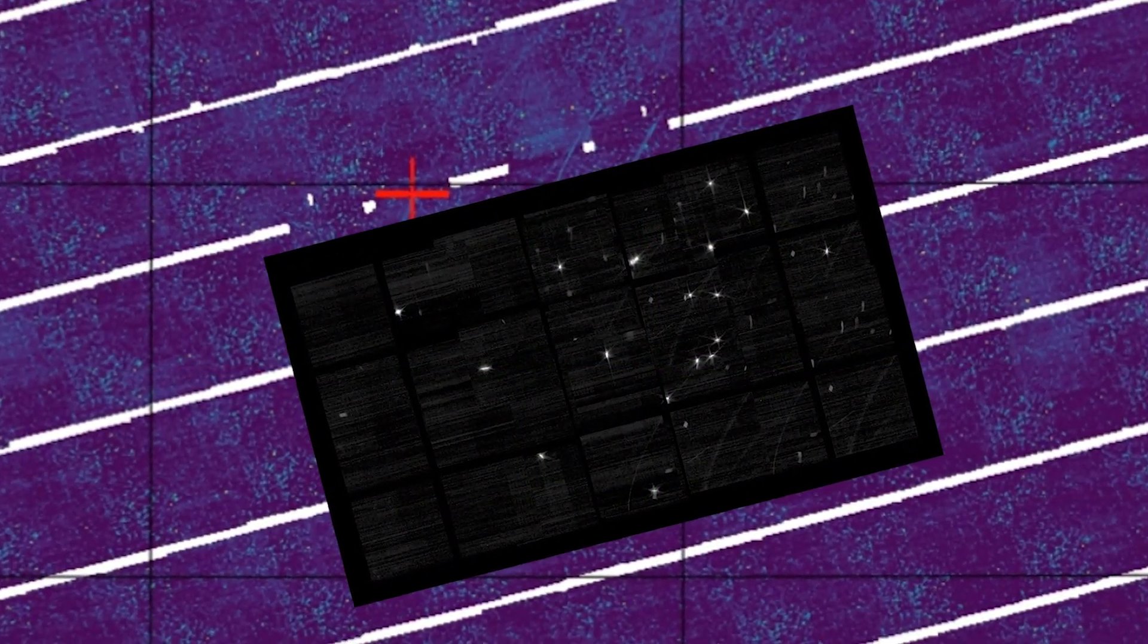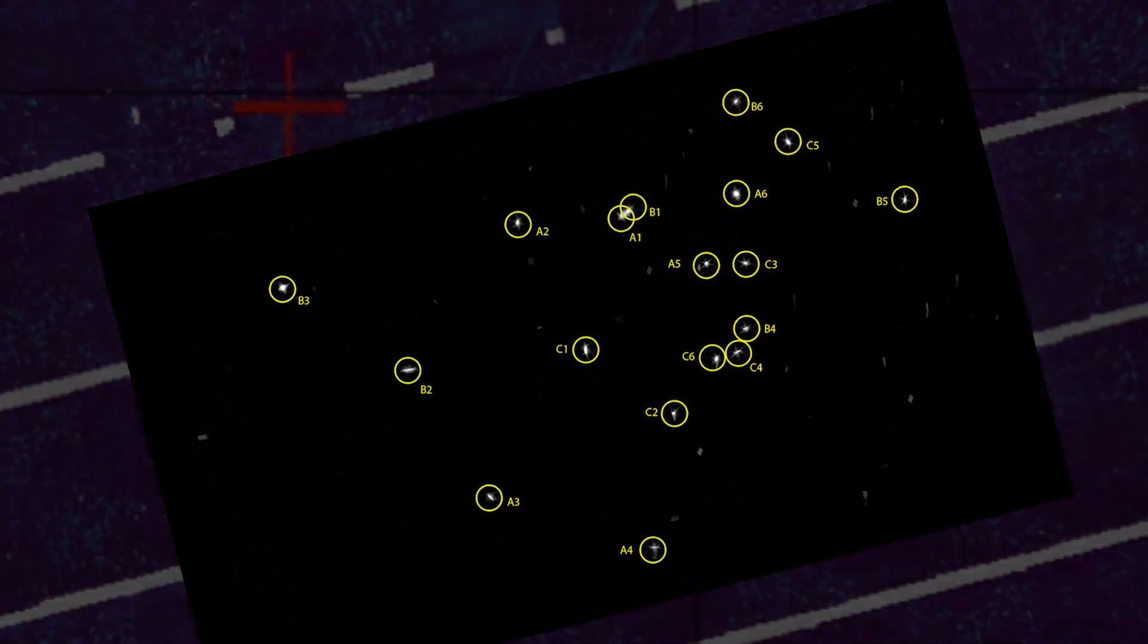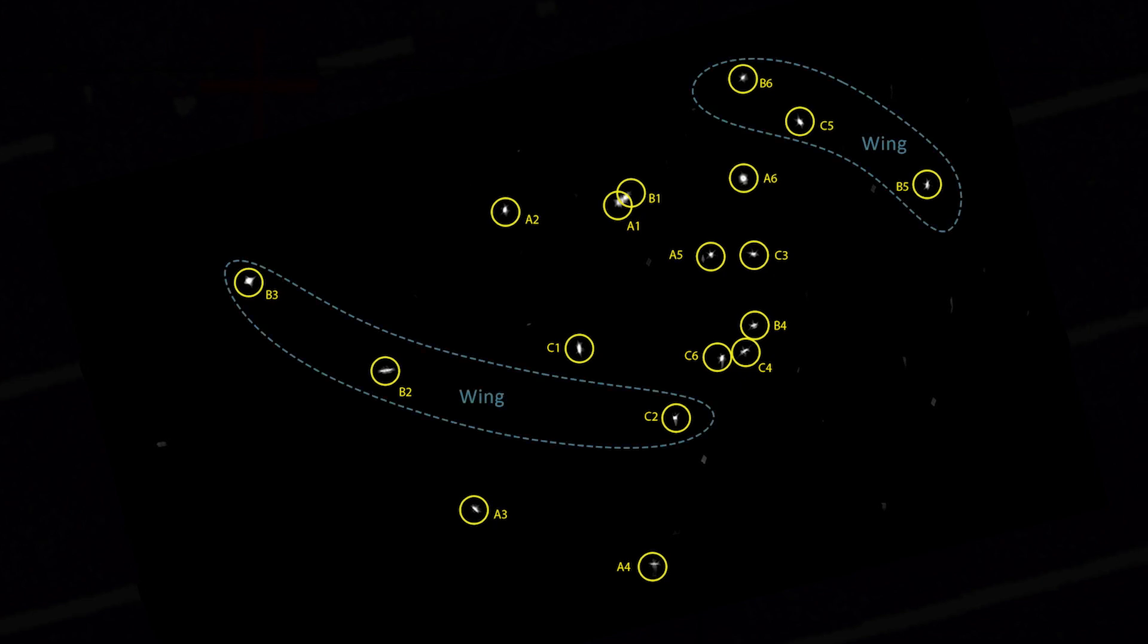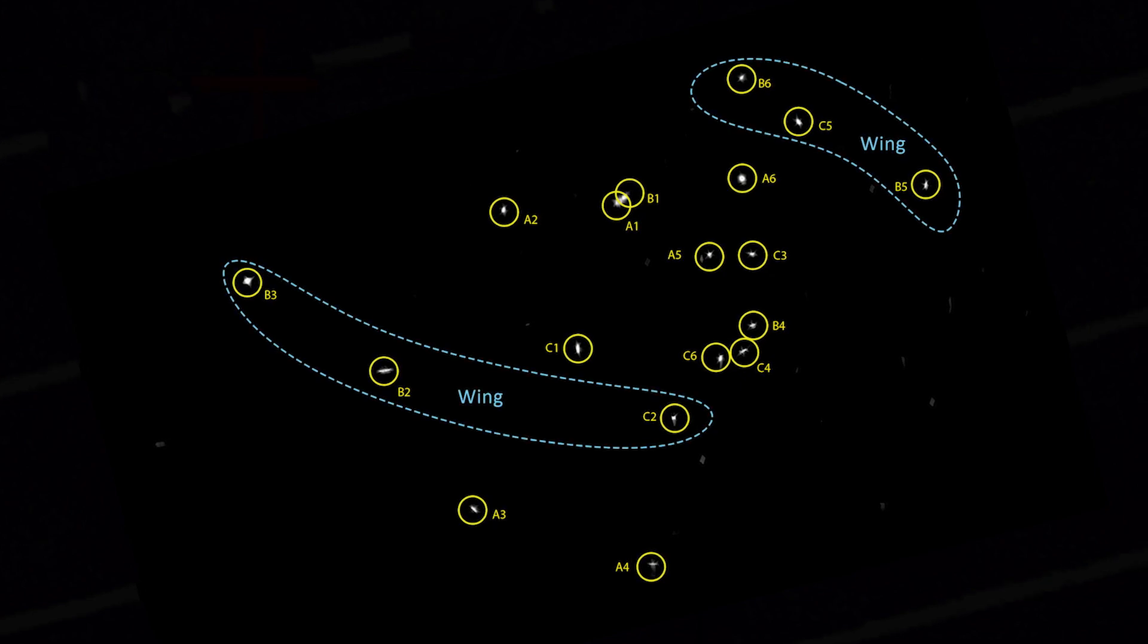The 18 spots were actually fairly close to each other, so really everything was very close to what was predicted. We've identified which of the 18 spots is which mirror. At this point, we even know which ones are from the wings.